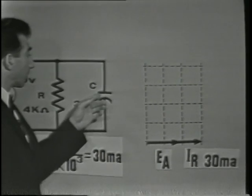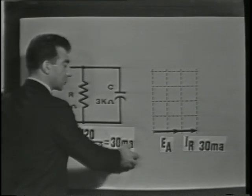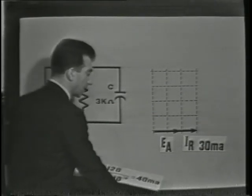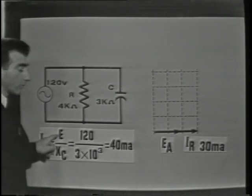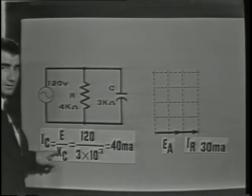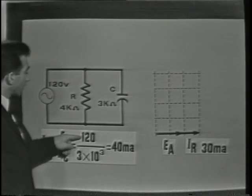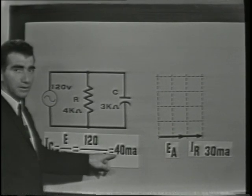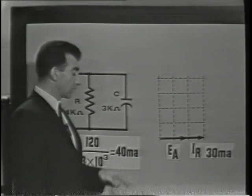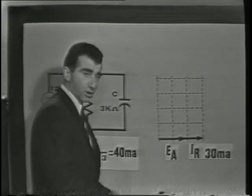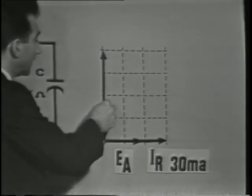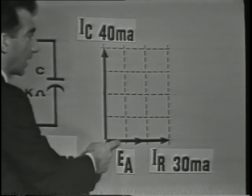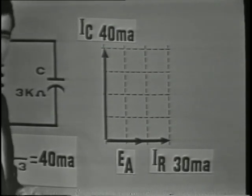The capacitive current, or IC, may be found in exactly the same way, simply applying Ohm's law. IC is equal to the voltage over the capacitive reactance: 120 volts over 3k ohms equals 40 milliamps. The vector for IC, or our capacitive current, will show 40 milliamps, 90 degrees ahead of EA, because the capacitor introduces a phase shift.